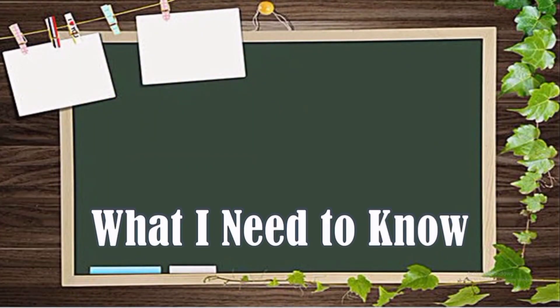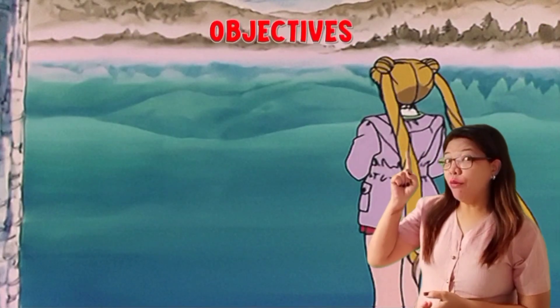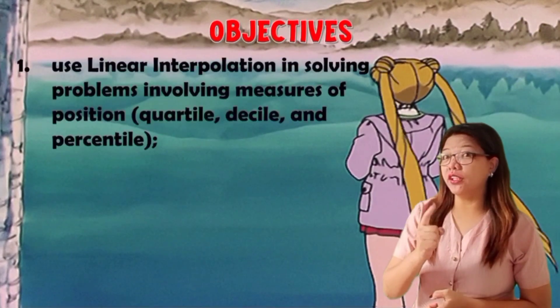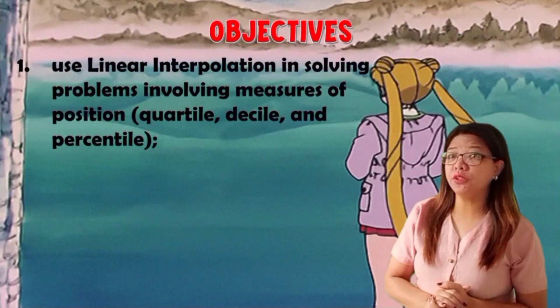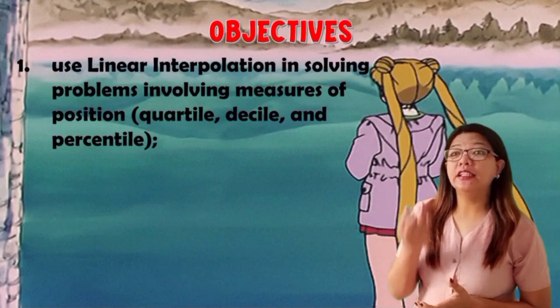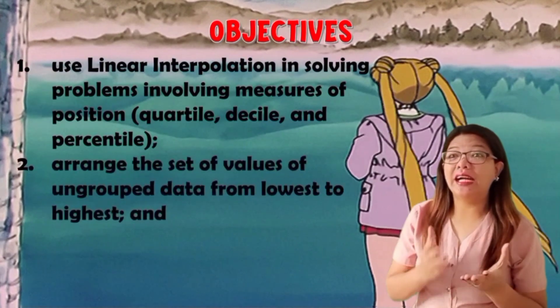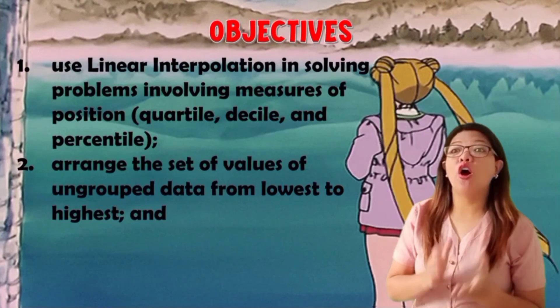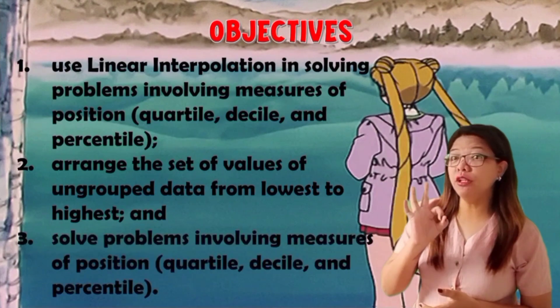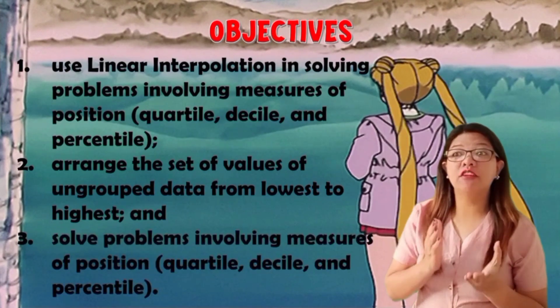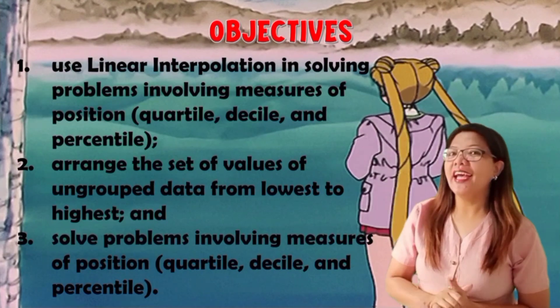What I Need to Know. For our objectives, number 1: use linear interpolation in solving problems involving measures of position in quartile, decile, and percentile. Number 2: arrange the set of values of ungrouped data from lowest to highest. And number 3: solve problems involving measures of position in quartile, decile, and percentile.